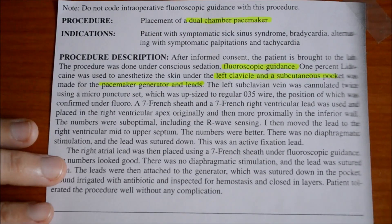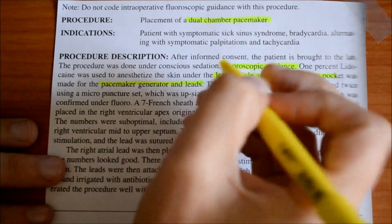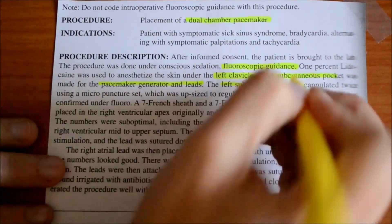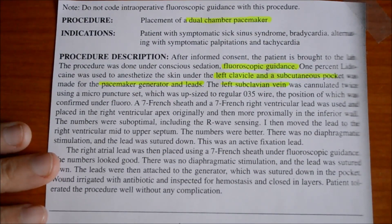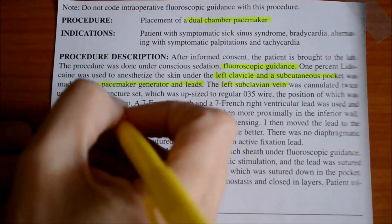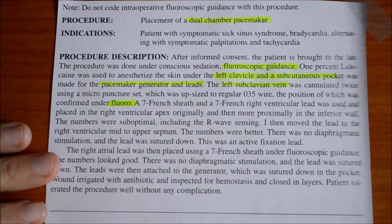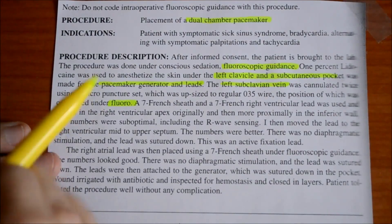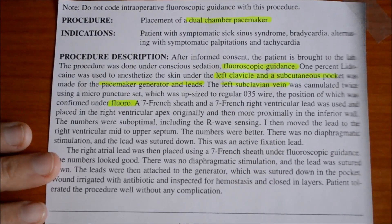The left subclavian vein was cannulated twice using a micropuncture set. The subclavian vein is giving us our approach of how they're going to get to the heart, which was upsized to a regular 0.35 wire, the position of which was confirmed under fluoro — again confirming that they're using fluoroscopic guidance to get from the left subclavian vein to the heart. As far as information on the puncture set and the wire, we don't need to know that — it is all integral to the procedure, so it does not need a separate code.